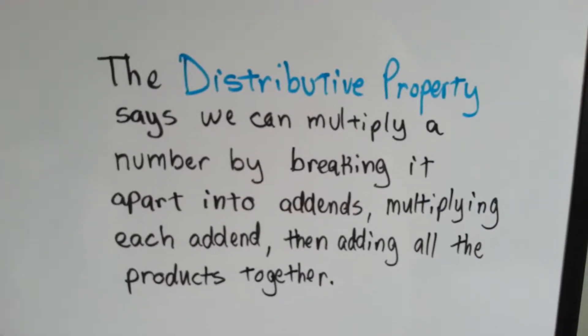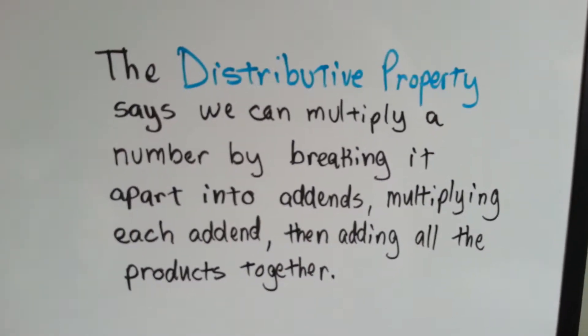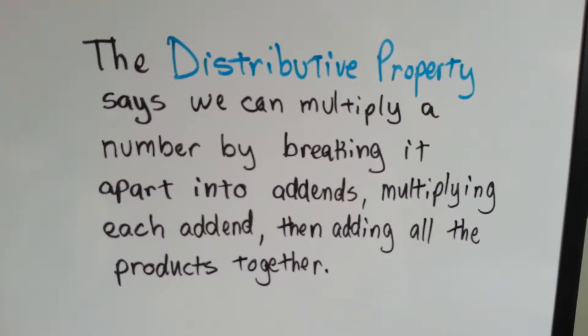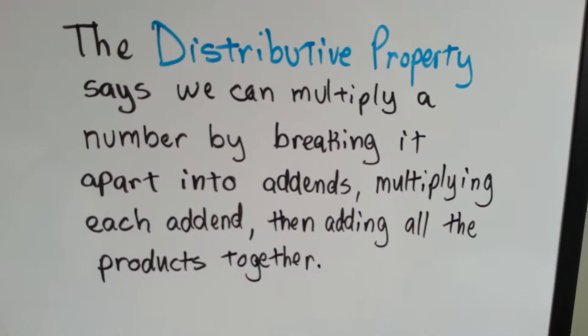Remember from our previous videos that the distributive property says we can multiply a number by breaking it apart into addends. We multiply each addend, and then adding all the products together.